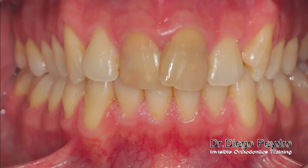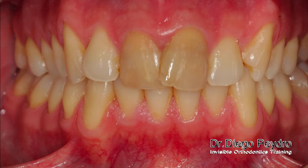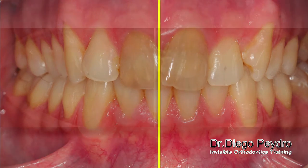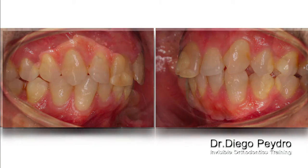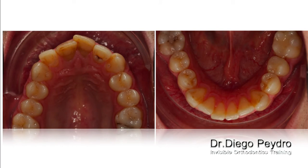Look at the midline deviation that this patient has. The upper midline is deviated to the right, as you can see here. Look at the Class 2 that we have on the left side — almost a full Class 2. Also look at the crowding, the shape of the upper and the lower arch — we have a narrow arch and big rotations in the upper incisors.